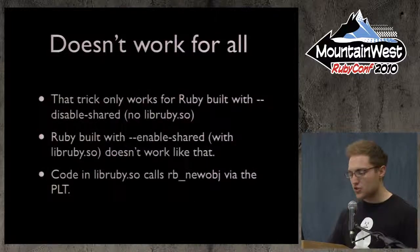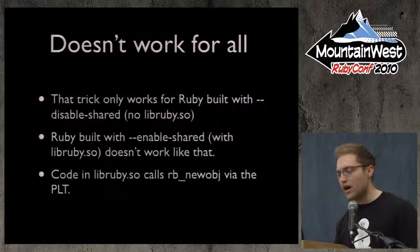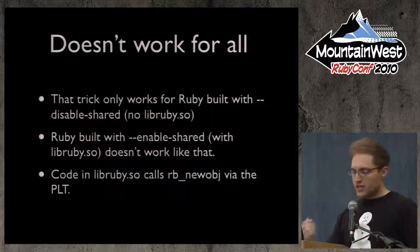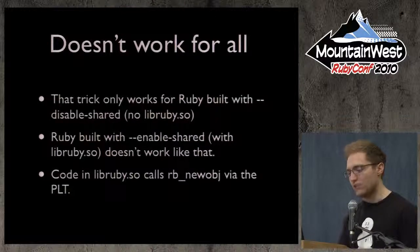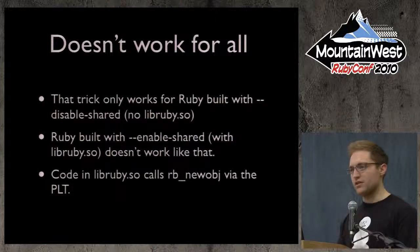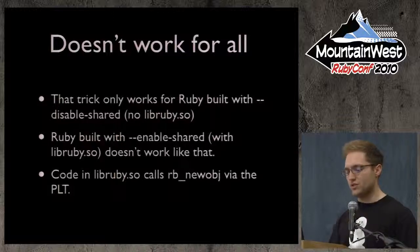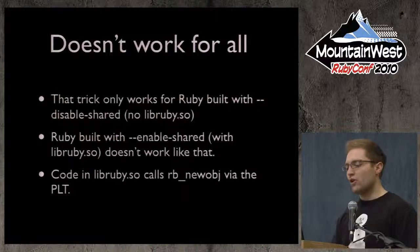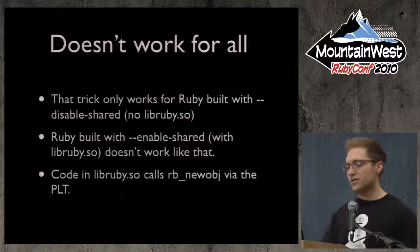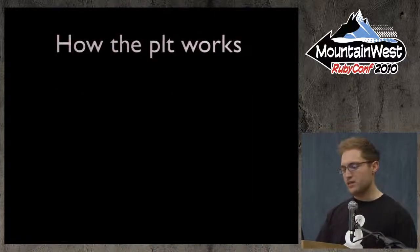This trick only works for Rubies built with --disable-shared that don't have a libRuby.so. But if you build Ruby with --enable-shared — which is how most Debian, Ubuntu, etc. boxes build Ruby — then code in libRuby.so calls rb_newobj via the PLT. So we need to do something else to handle that case.